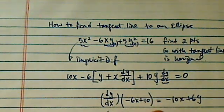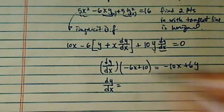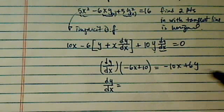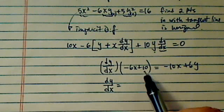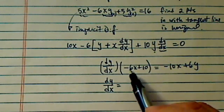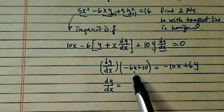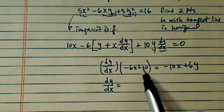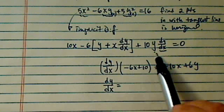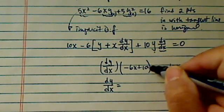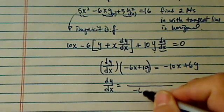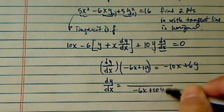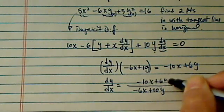So my dy dx, which will give me the slope for the tangent line, is equal to, let's take the minus sign. So it's 10x, 6x. I think I missed a sign here. So I will have a minus 6x plus 10y, and a minus 10x plus 6y.